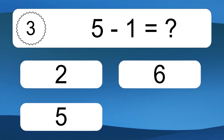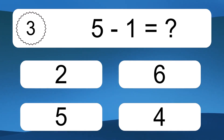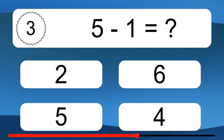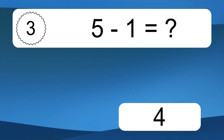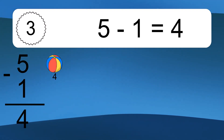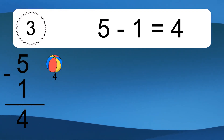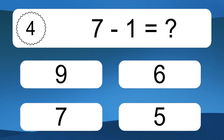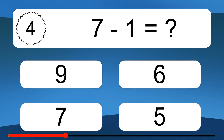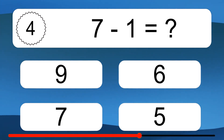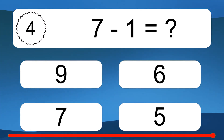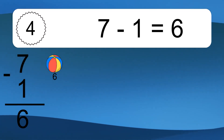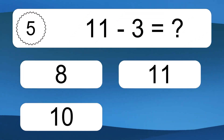5 minus 1 equals what? 5 minus 1 equals 4. Let's count it: 4. 7 minus 1 equals what? 7 minus 1 equals 6. Let's count it: 6.